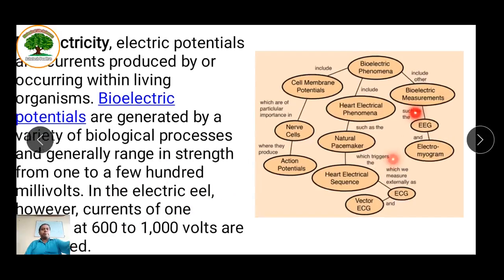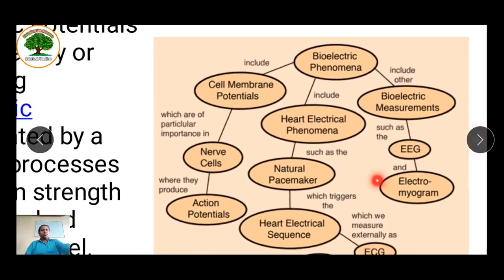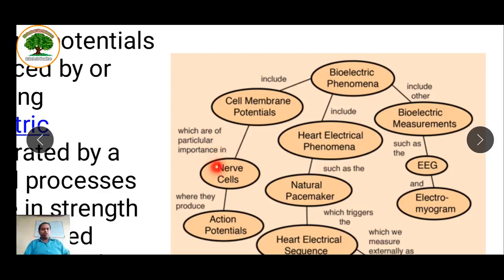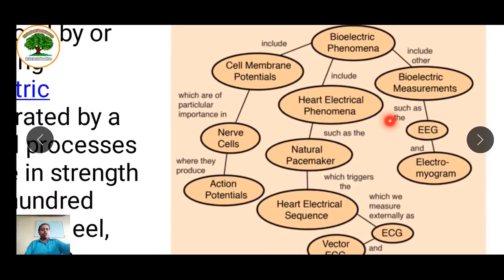The bioelectric phenomena consists of three major things. First is cell membrane potential — these are the membrane potentials around a cell membrane. It is particularly important in nerve cells for the conduction of impulses and is responsible for action potential, making it very important in the conduction of nerve cells and nerve fibers.